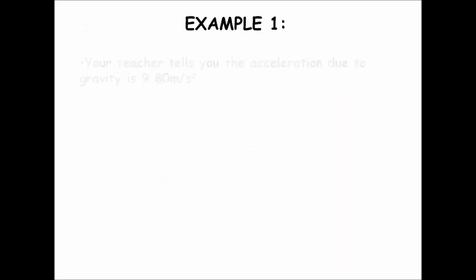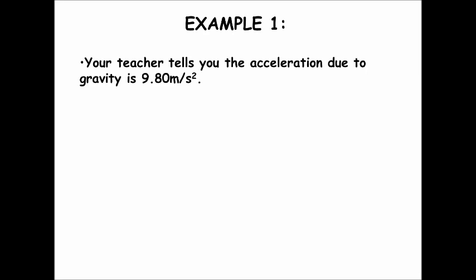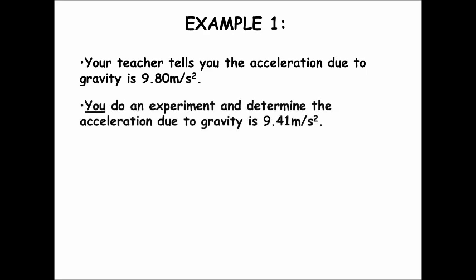Here's an example. If your teacher tells you that the acceleration due to gravity is 9.80 meters per second squared — you might not know what that means — but your teacher told you that the accepted value was 9.80 meters per second squared. Then you do an experiment and find that it's 9.41 meters per second squared. That's the result of your experiment.